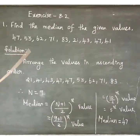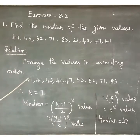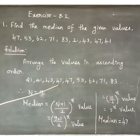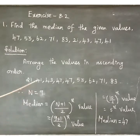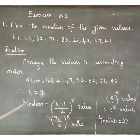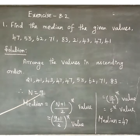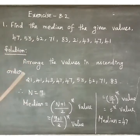First, arrange the values in ascending order: 21, 41, 43, 47 up to 83. The number of observations is 9. Since 9 is an odd value, if the number of observations is odd, there is only one middle value.